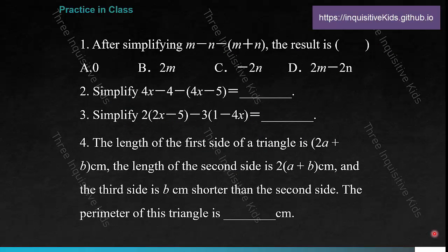Now some in-class practice. Problem 1: after simplifying M minus N minus the sum of M and N, the result is blank. After removing the brackets — which are negative — we get M minus N minus M minus N; they all cancel out, giving zero. Problem 2: simplify 4x minus 4 minus the difference of 4x and 5. After removing the negative brackets, we change signs: 4x minus 4 minus 4x plus 5, and combining like terms gives 1.